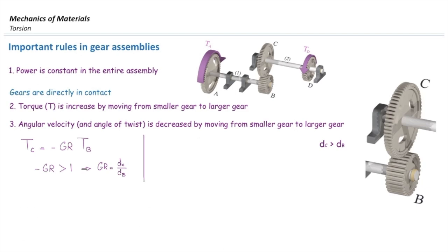Now consider the same case, but assume that we want to determine twist in C in terms of twist in B. In that case, what is the gear ratio? In this case, we use the same equation.